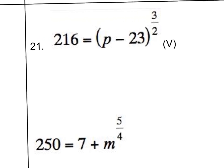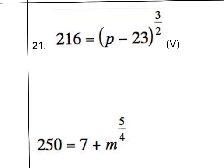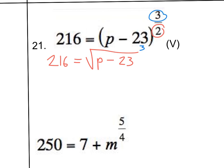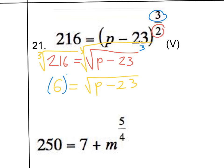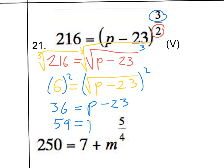And then number 21. We've got 216 equals p minus 23, all to the 3 over 2. We already have the weird thing by itself, so we rewrite this as a radical: 216 equals the square root of p minus 23, to the third power. I'm going to undo this by taking the cube root of both sides — the cube root of 216 is 6. So we get 6 equals p minus 23. We're going to square both sides, giving us 36 equals p minus 23. Adding 23 to both sides: 59 equals p. And that's it. Thank you.